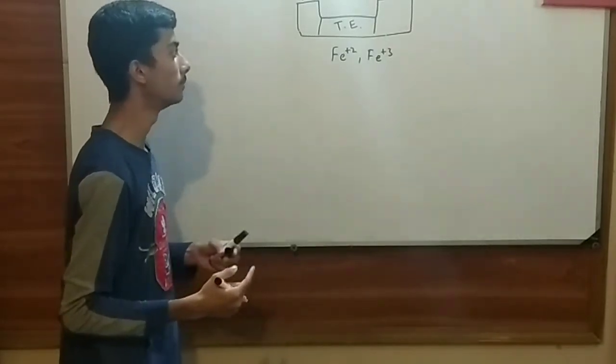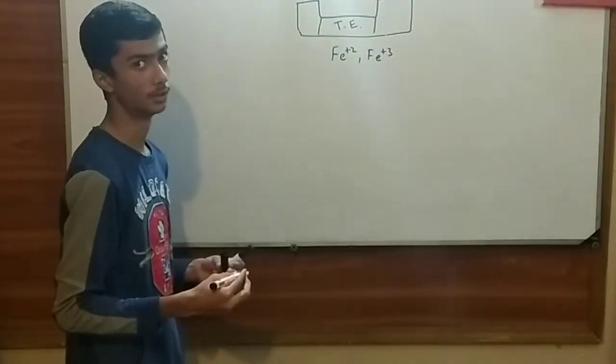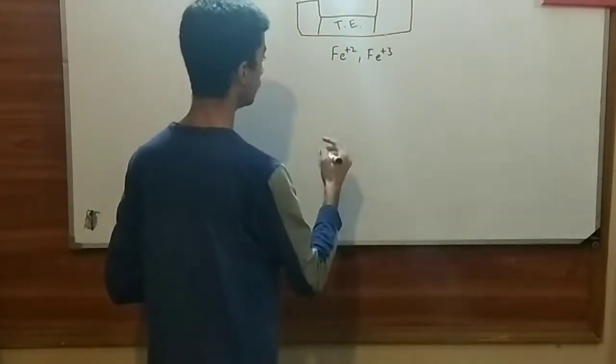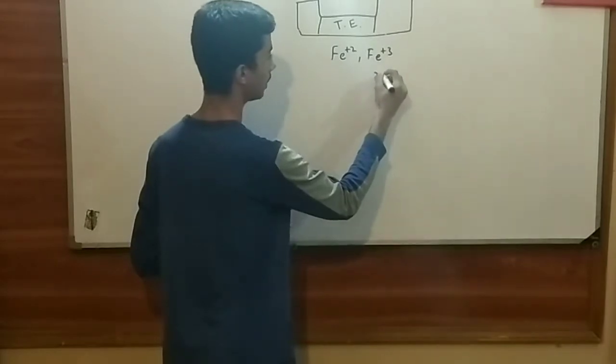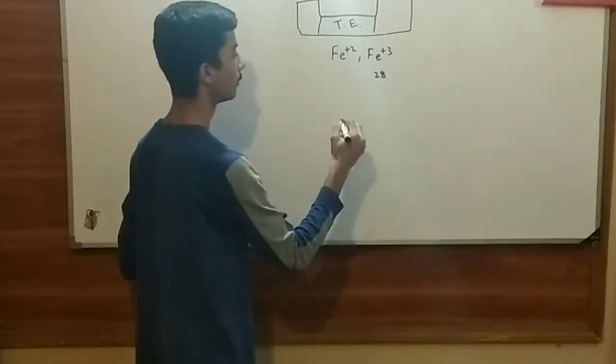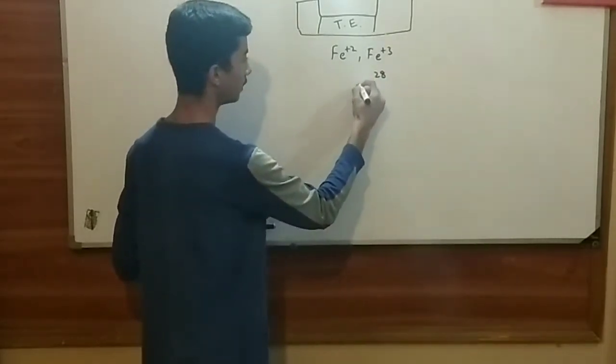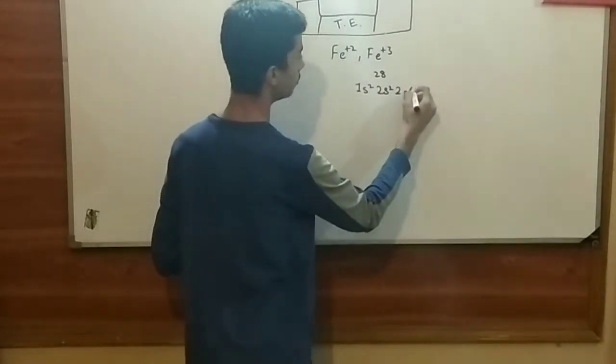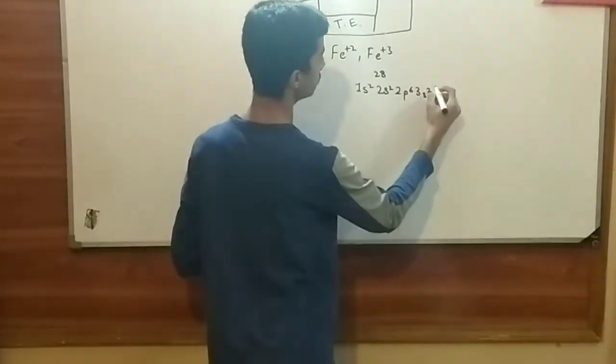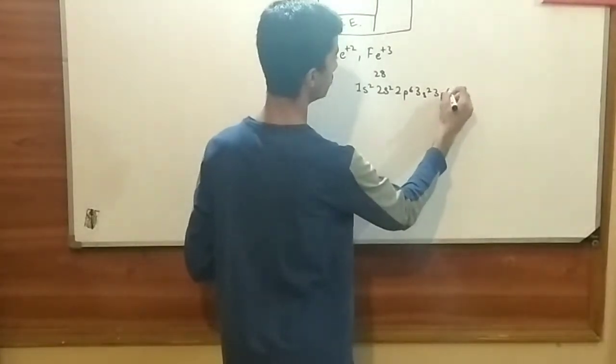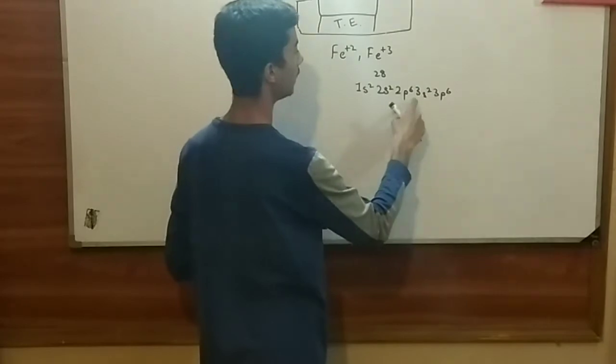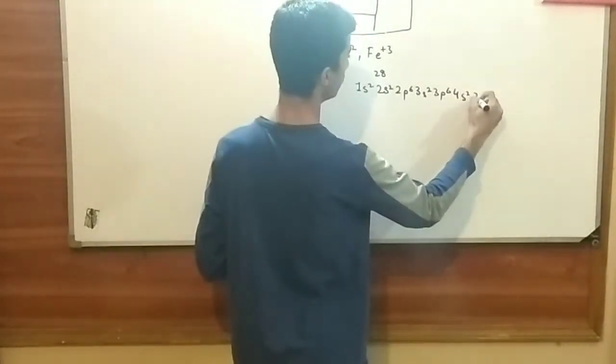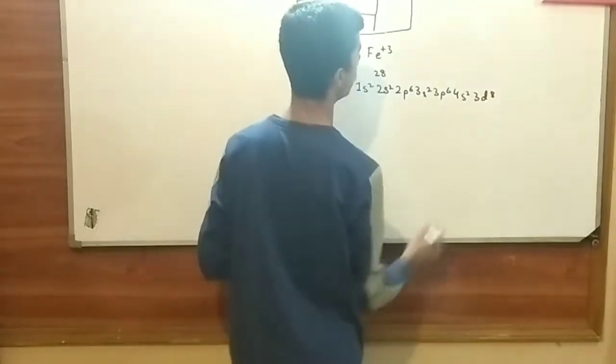Now, there are also some things about the electronic configuration. For example, if I am just going to write the electronic configuration of the iron, so iron has atomic number 28. It would be 1s2, 2s2, 2p6, 3s2, 3p6, that would be 2, 4, 10, 12, 18, then 4s2 which is 20, and 3d8, it would be 28.